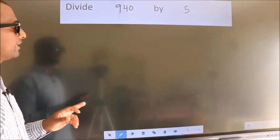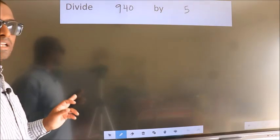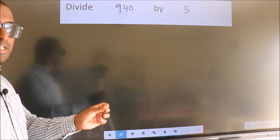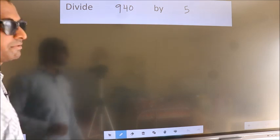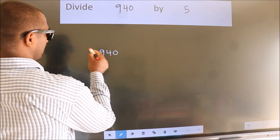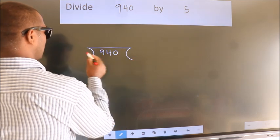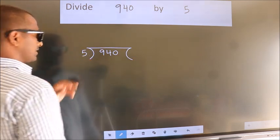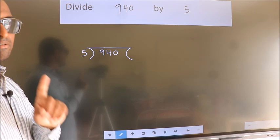Divide 940 by 5. To do this division, we should frame it in this way. 940 here, 5 here. This is your step 1.